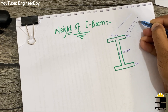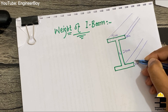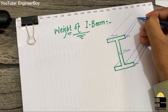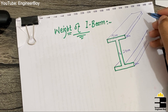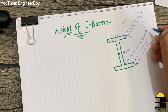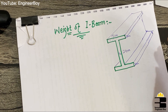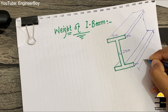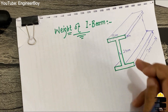Let me draw a 3D model so you can understand what this actually looks like in practical life. This is roughly an isometric view of the I-beam. The length of the beam is 2 meters.